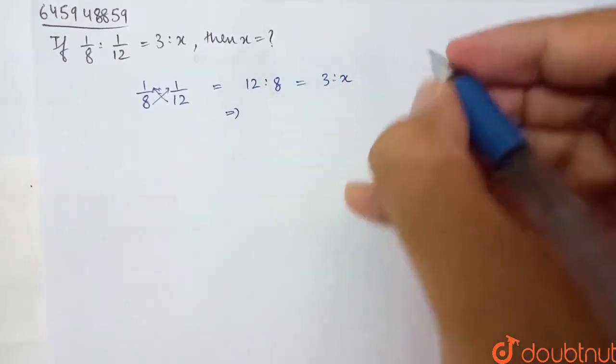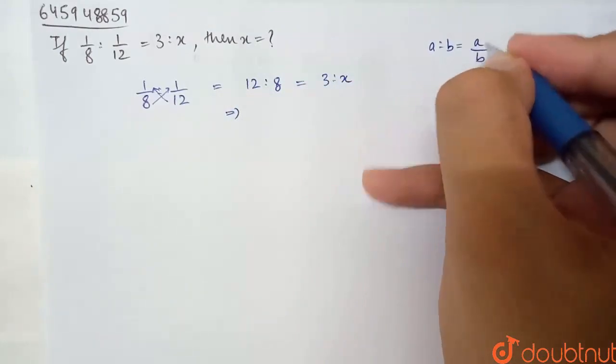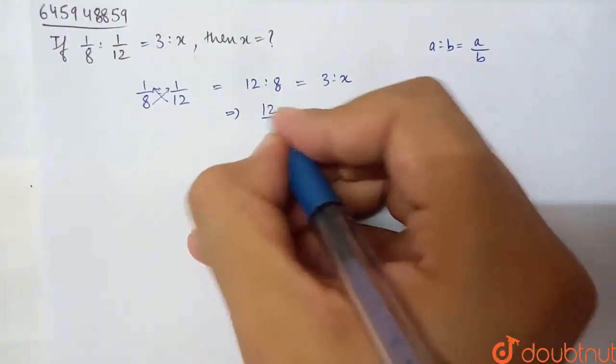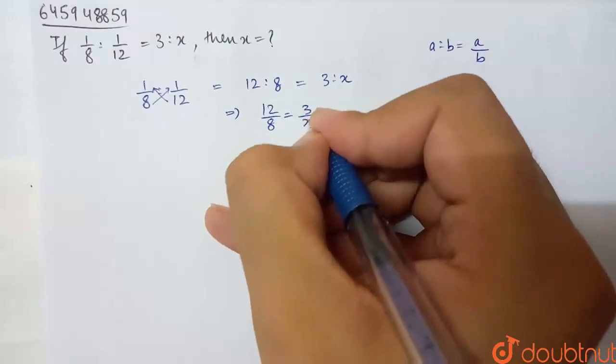This basically is a is to b. So what do I do? Basically a/b. This is 12/8 is equal to 3/x.